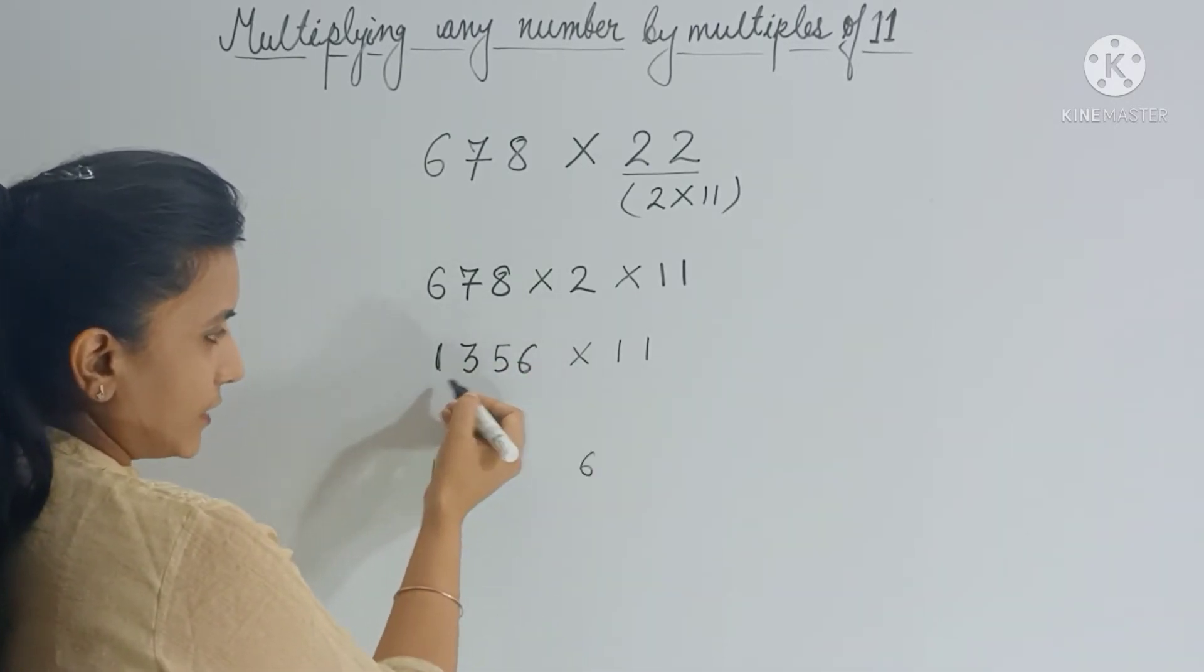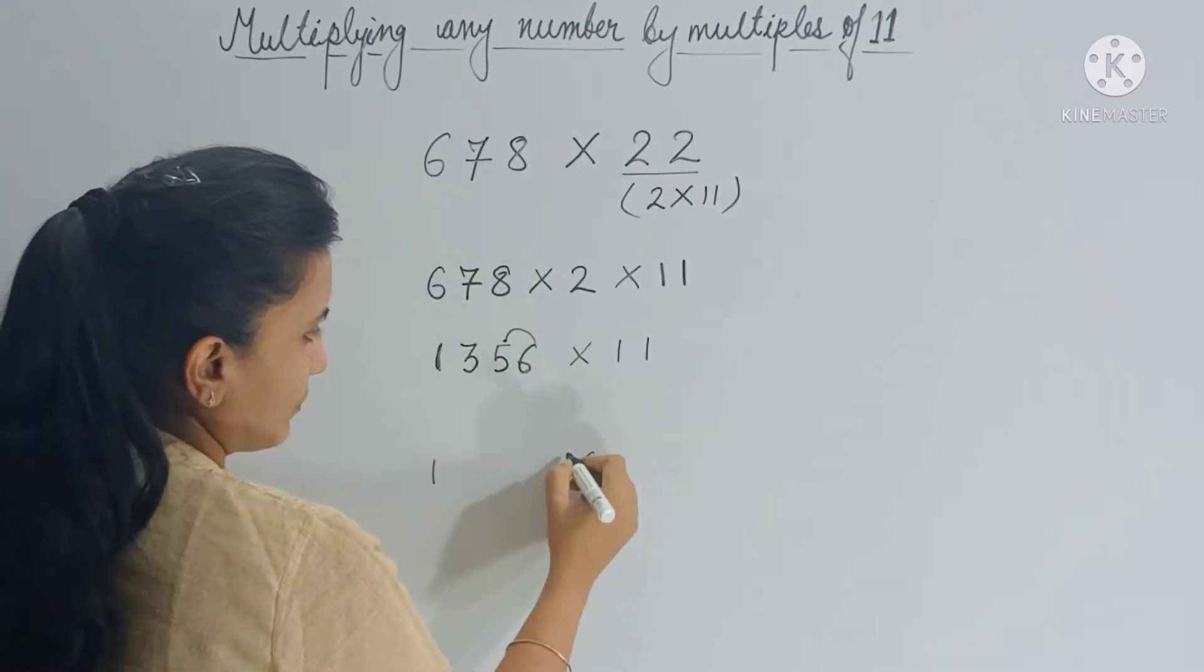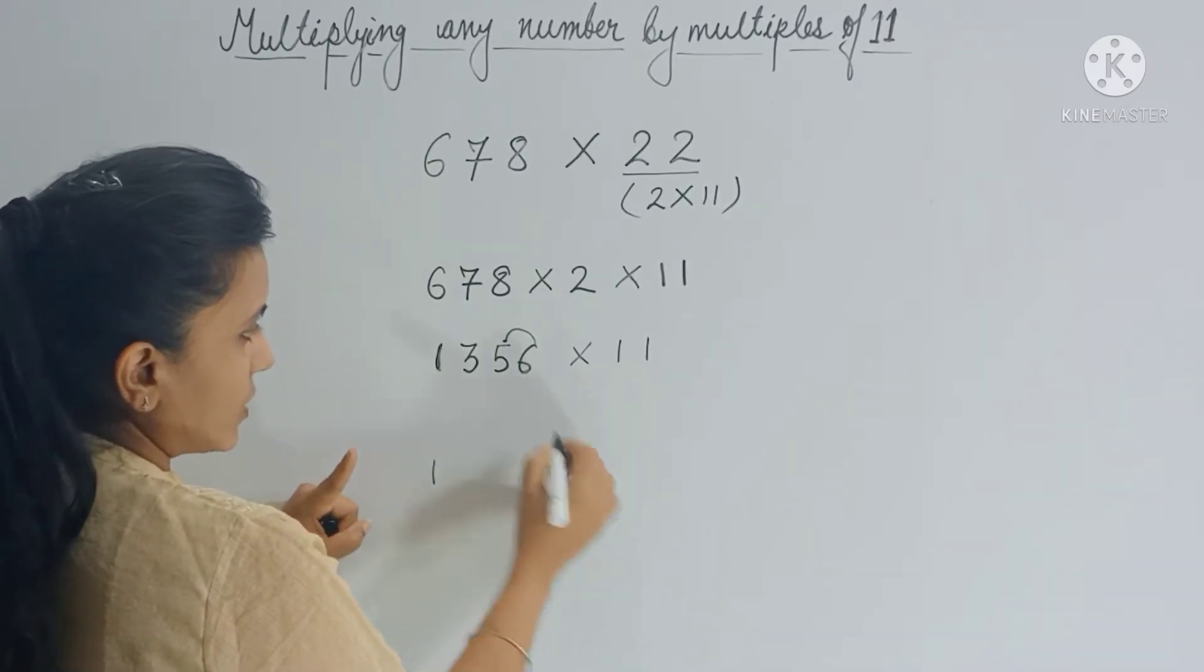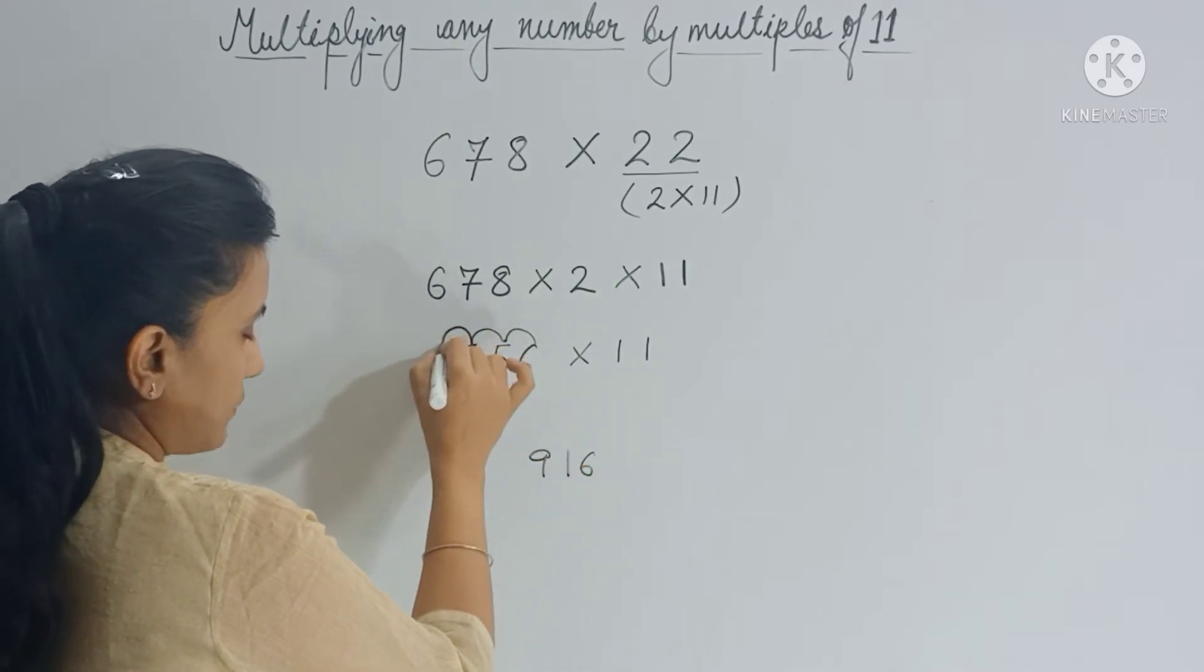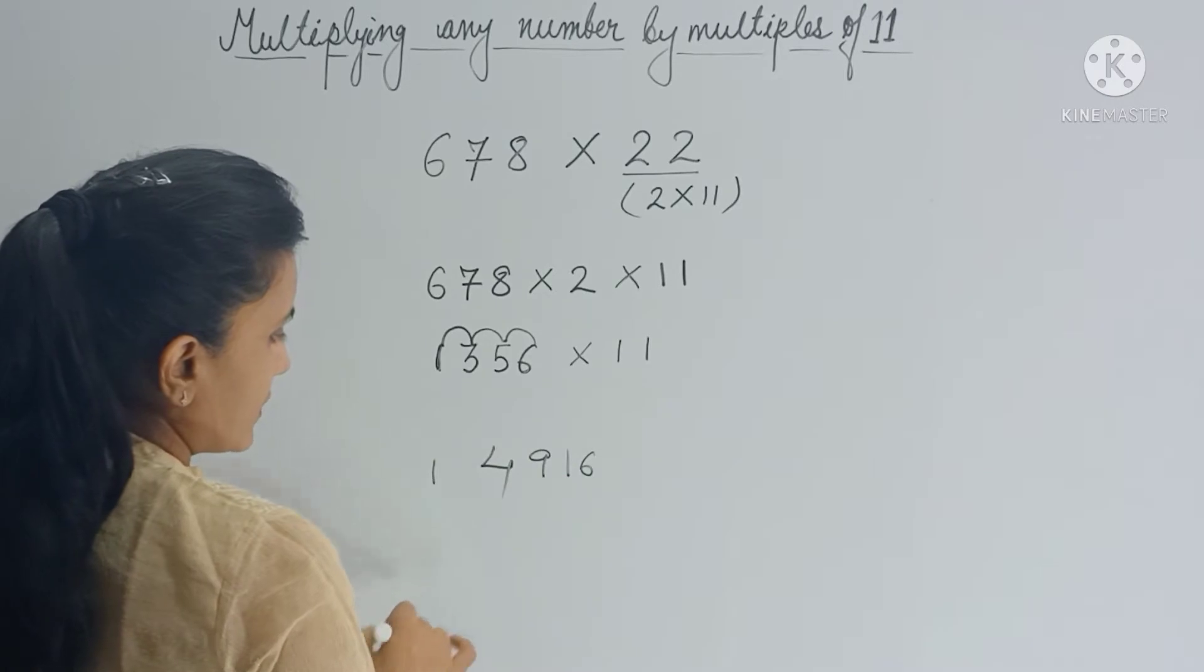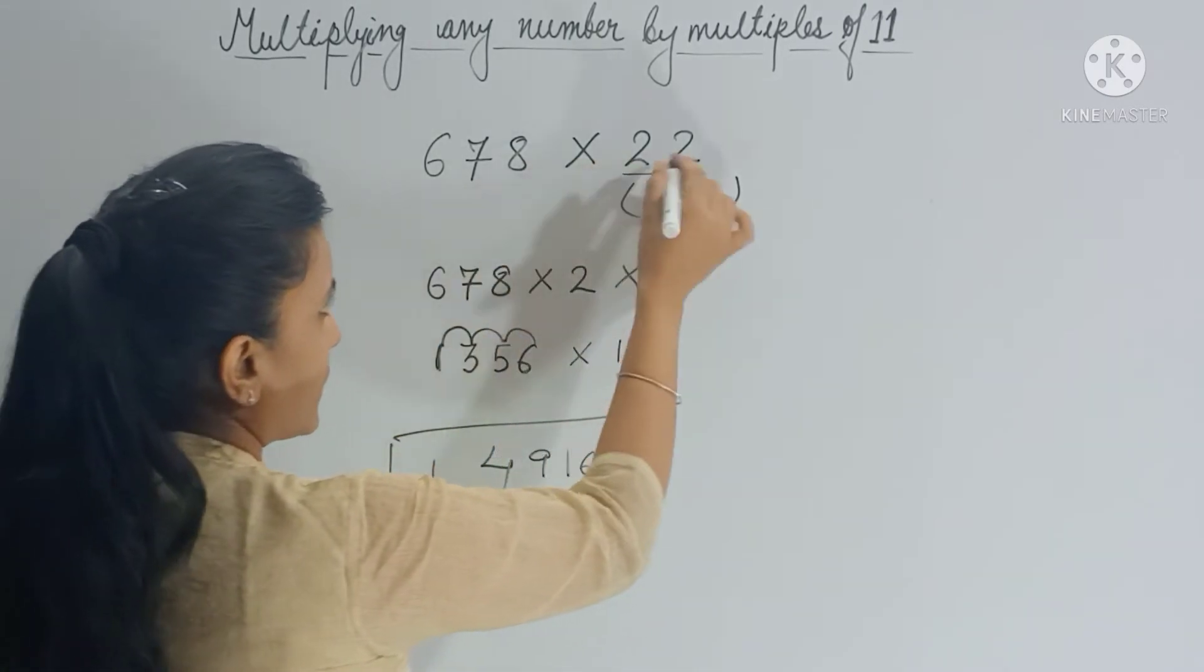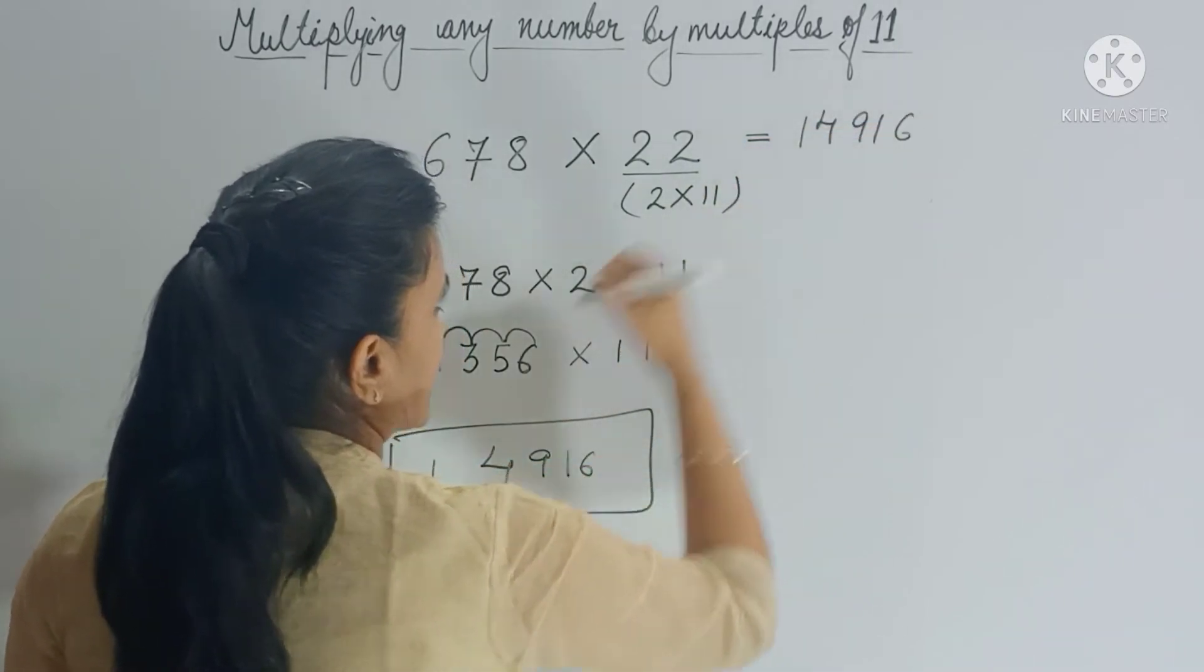Now you have to add these numbers in pairs. So 6 plus 5 gives you 11, so 1 is carry forward. Now 5 plus 3 gives you 8, 8 plus 1 is 9, and 1 plus 3 gives you 4. So your answer is 14916. So when you multiply these two numbers, you will get 14916.